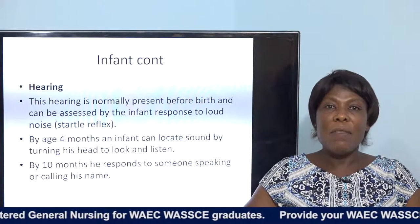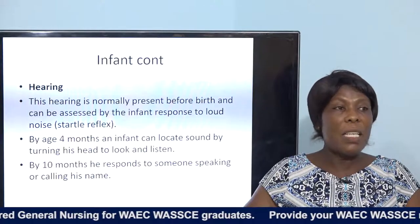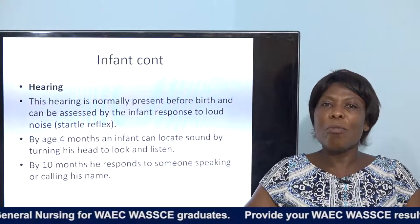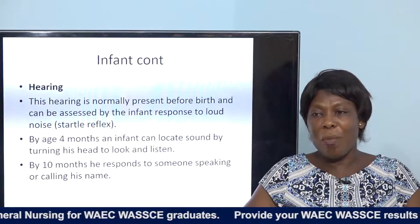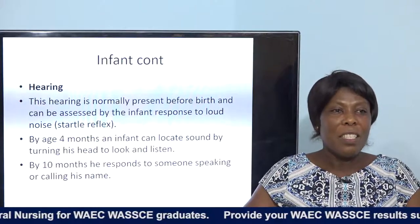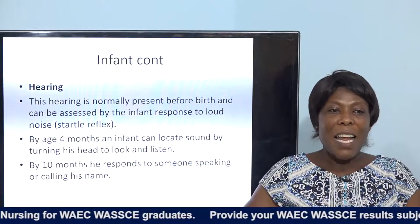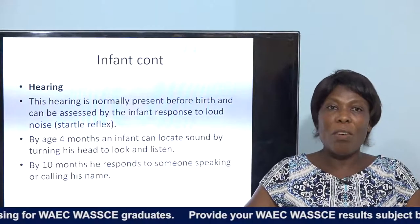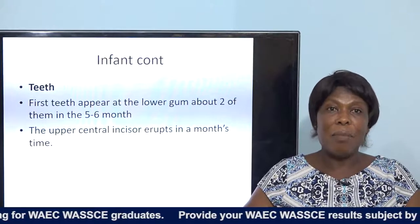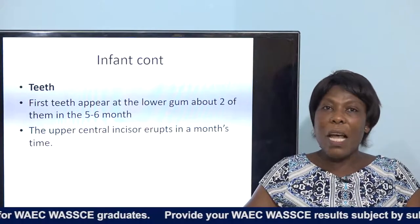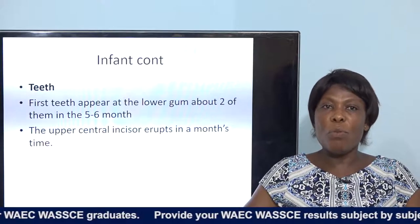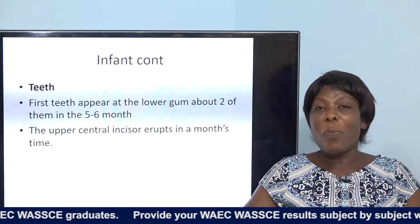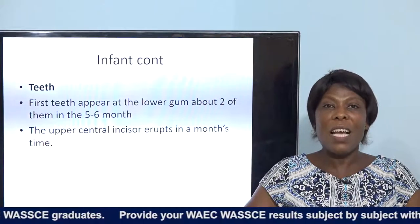By age four months an infant can locate sound and quickly turn in the direction of the sound. By ten months the infant responds to simple speaking or calling of their name — if you call their name they will turn to you. Teeth: the first teeth appear at the lower gum, about two of them, in the fifth to sixth month, so by six months you should see the first two teeth.